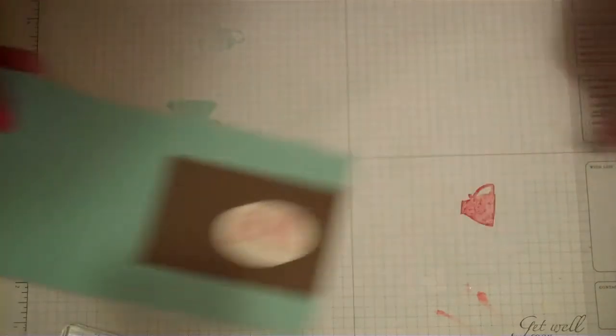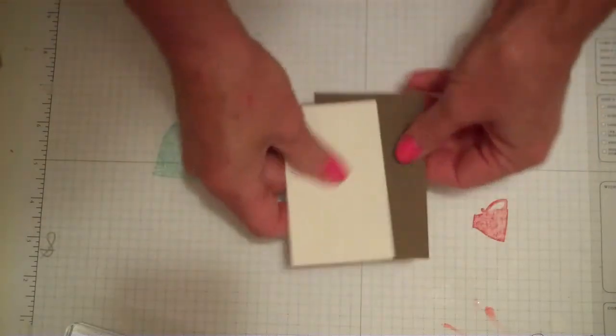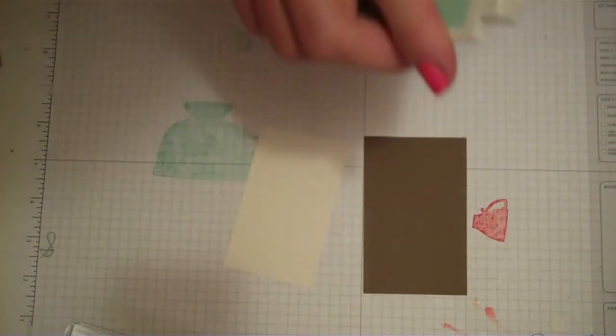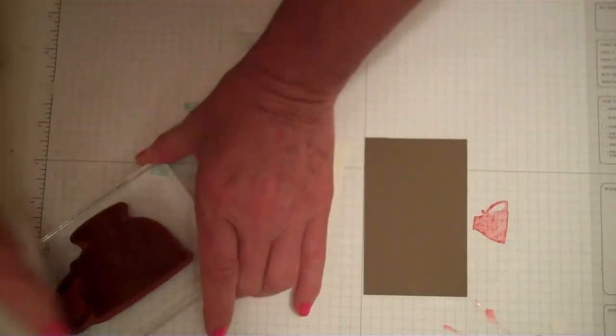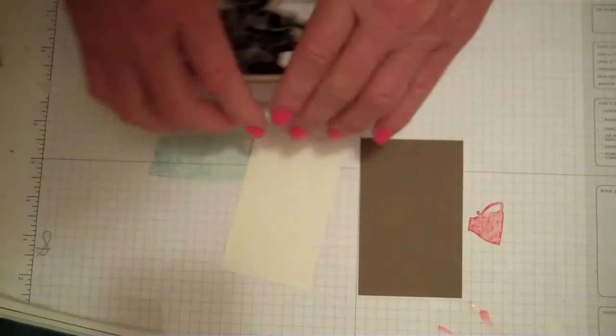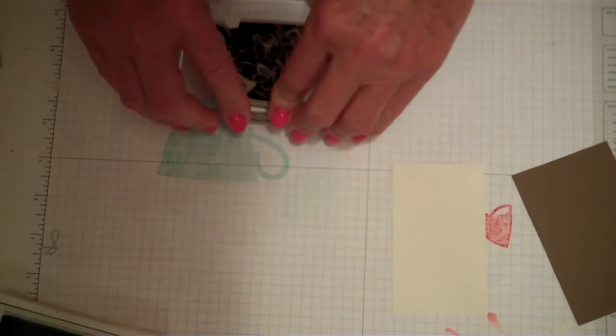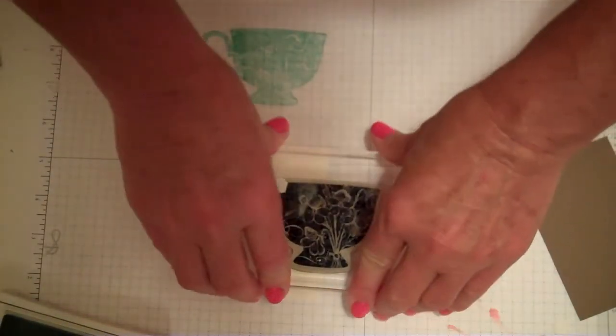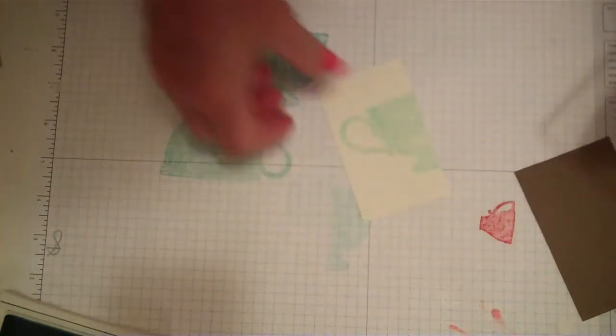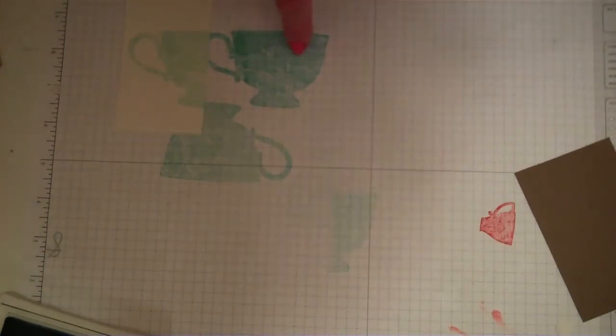Now I'm going to show you a technique with this piece called stamping off. You've probably done it. Stamping off is where you ink up the stamp full ink, stamp up once, and then you come to your card. I want the handle on there and you stamp it.